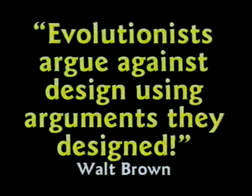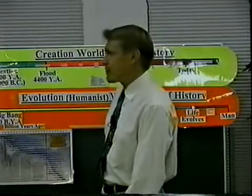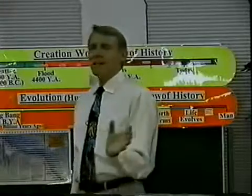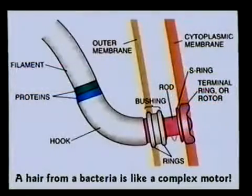Walter Brown said it well: 'Evolutionists argue against design using arguments they designed.' A great book on this topic is Darwin's Black Box by Michael Behe, a biochemist. He goes into the complexity of things — each chapter has two sections, a simple summary first and then the detailed version. For instance, he takes an entire chapter describing the hair on a bacterium — a tiny hair that whips around and makes it swim, with basically a rotary engine at the bottom.